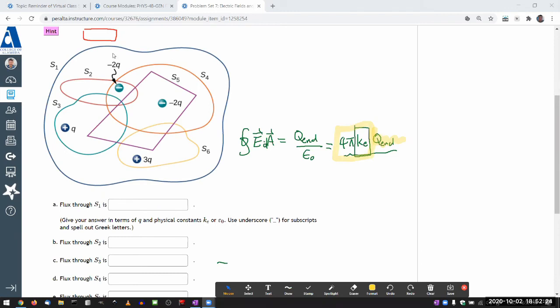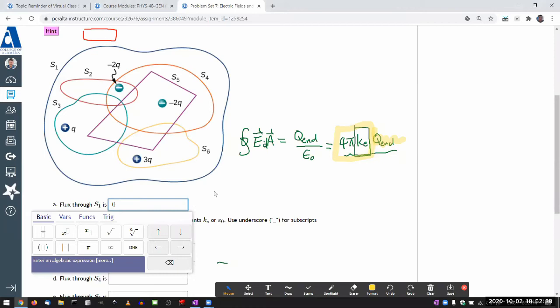Flux through S1—that's this whole big loop that encloses everything. Let me add up all the charges: 4Q plus 4Q minus 4Q... they add up to zero. So the net flux will be zero.